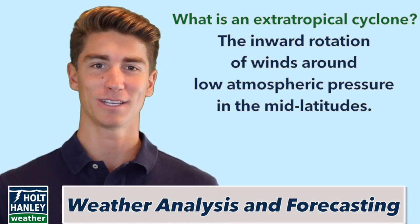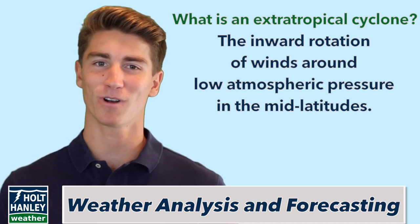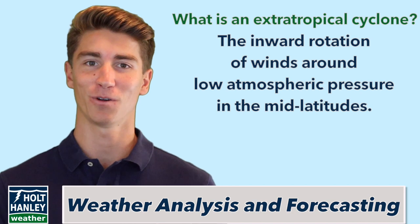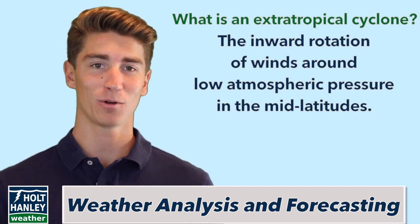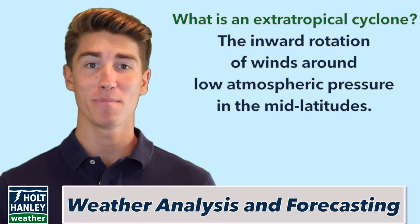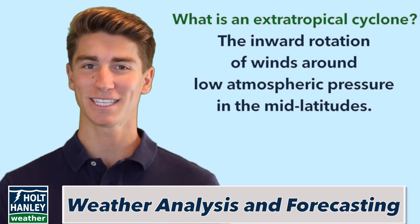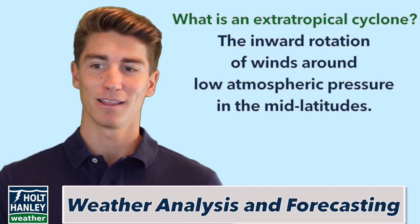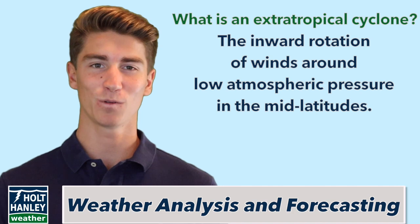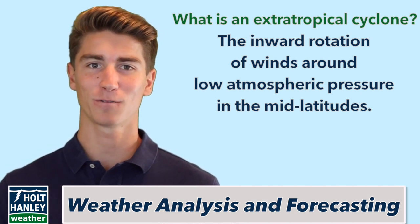When you hear the words extra-tropical, you might be inclined to think it's super-tropical, like it's right on the equator, but this is actually the opposite of what's true. When we say extra-tropical, we're actually talking about outside of the tropics, in the mid-latitudes, which is from 23.5 degrees to about 66 degrees. The reason this is outside of the tropics doesn't have as much to do with weather as it does actually the tilt of Earth's axis.